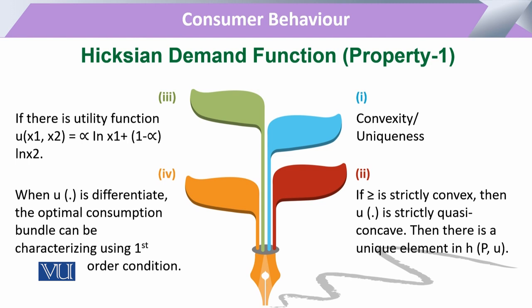Another property is convexity and uniqueness. The utility function should be convex; if it is concave, it becomes very difficult to express all the properties of the Hicksian demand function. If the function is strictly convex — expressed as a continuous utility function — then it is strictly quasi-concave, and this property ensures there is a unique element in the Hicksian demand function.